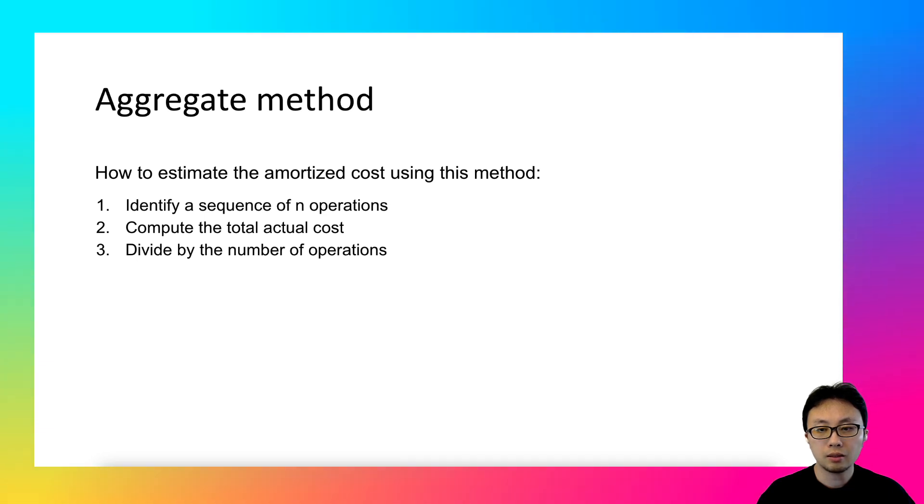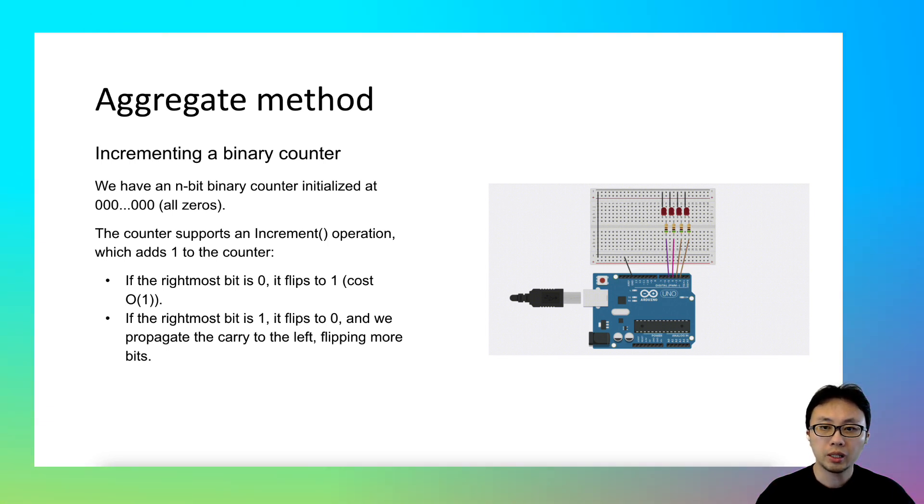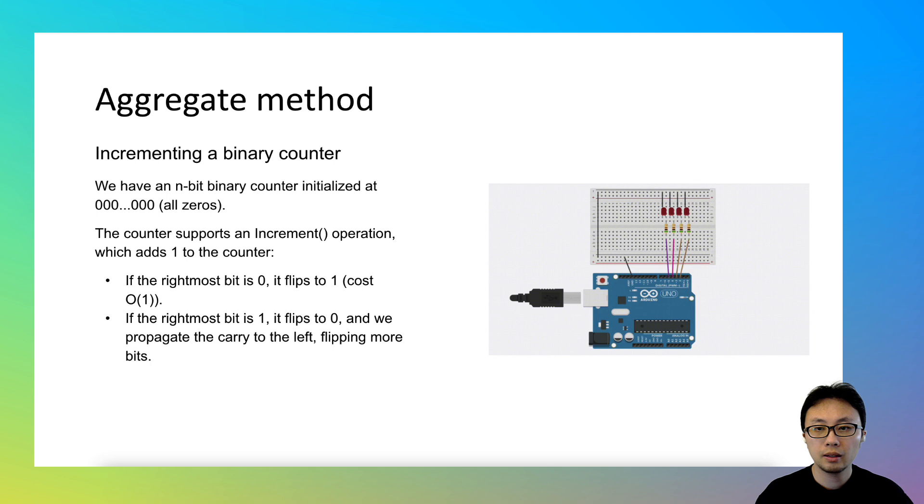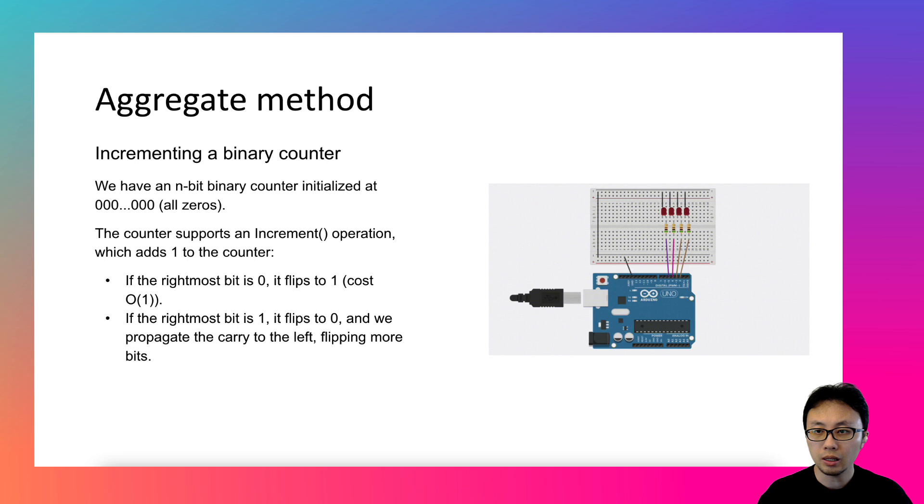Let's apply these steps to an example to make sense of the aggregate method further. Let's look at an operation on binary numbers. The operation is named increment. So what does this increment operation do? Given an n-bit binary number initialized as all zeros, this operation flips the rightmost bit by adding a single one to that bit.